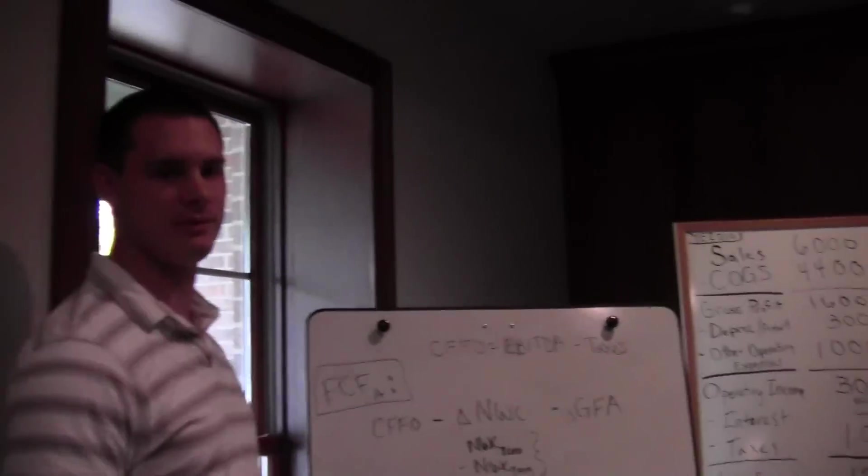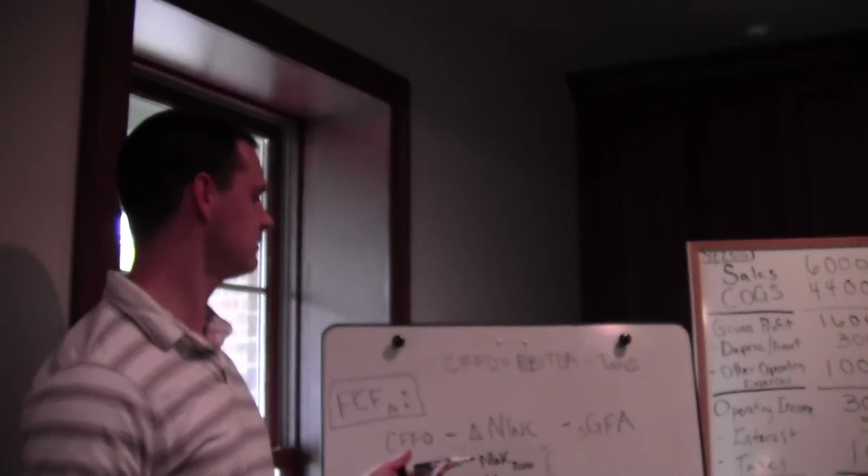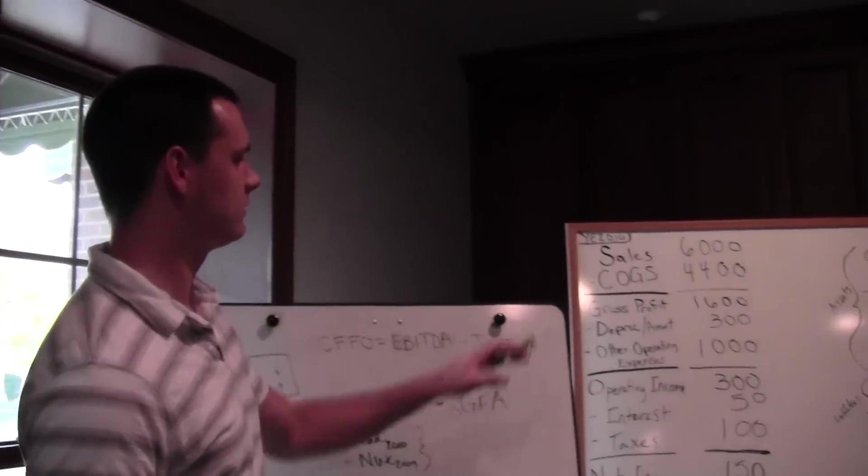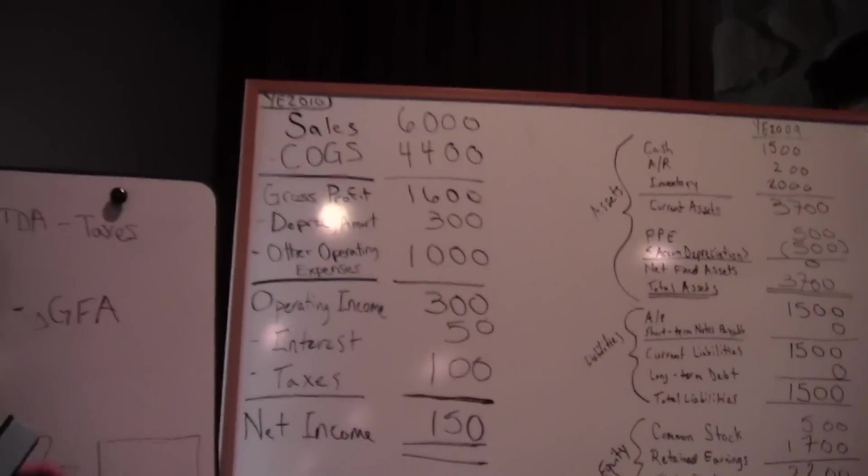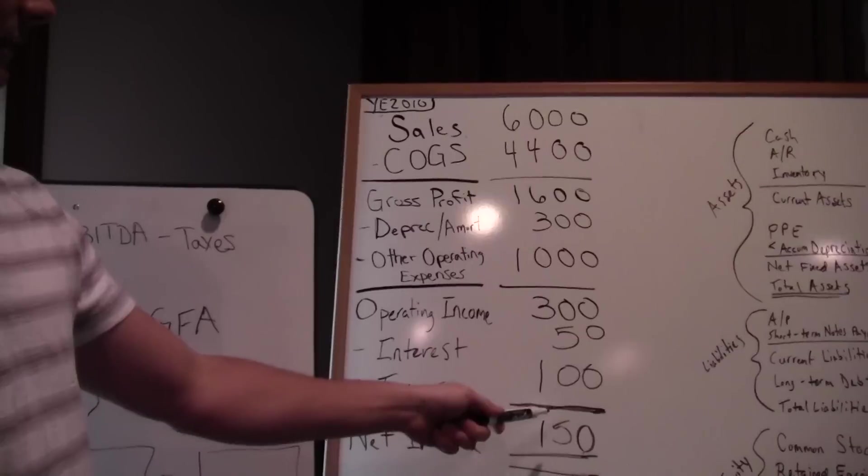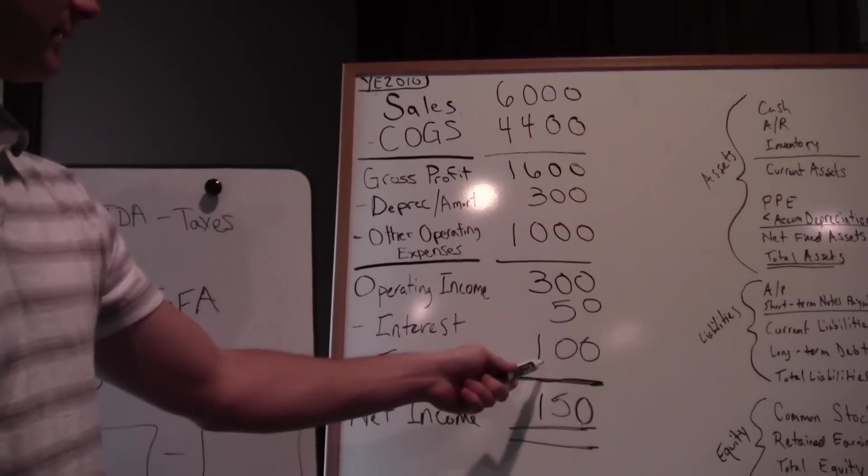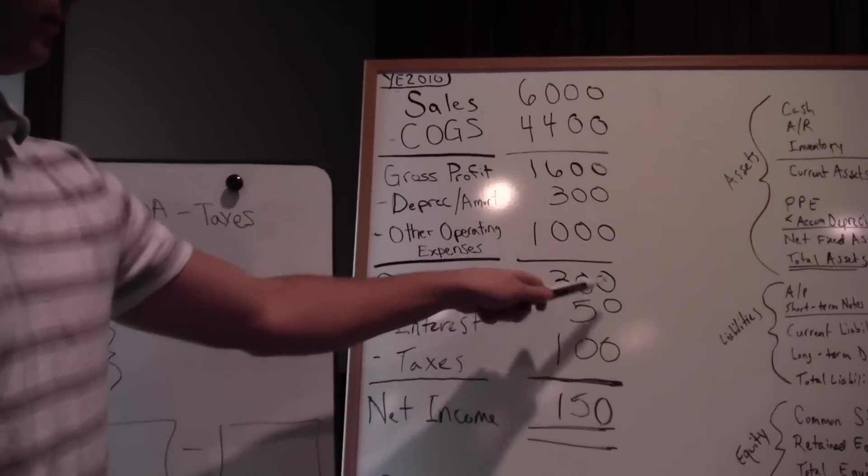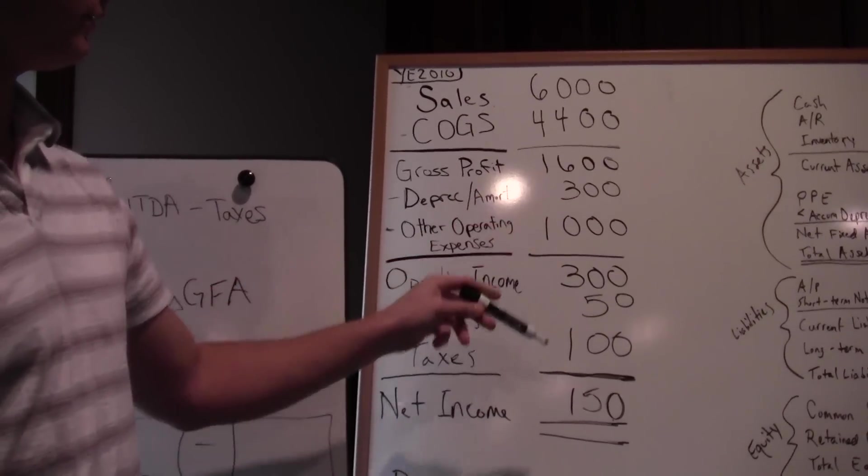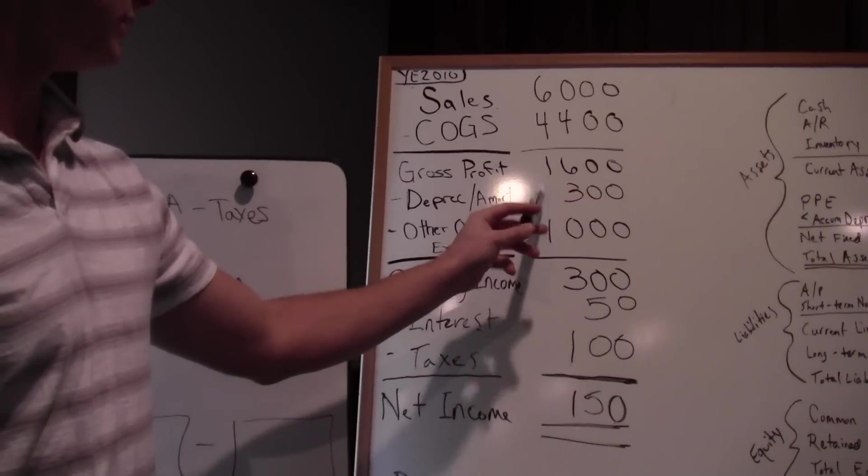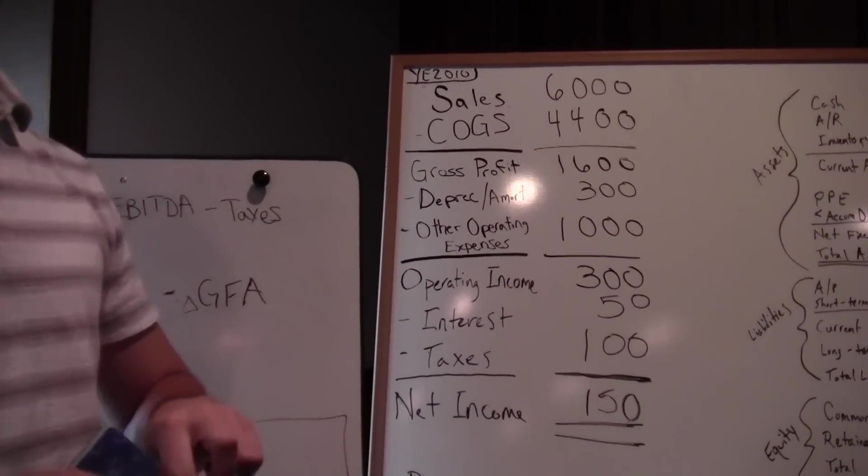So let's start with cash flow from operations, which is our EBITDA minus taxes. We need our income statement for that, so that's what's on this board right here. For EBITDA, we take our net income, add back our taxes ($250), plus our interest ($300), plus our depreciation (another $300), so we're at $600 now.